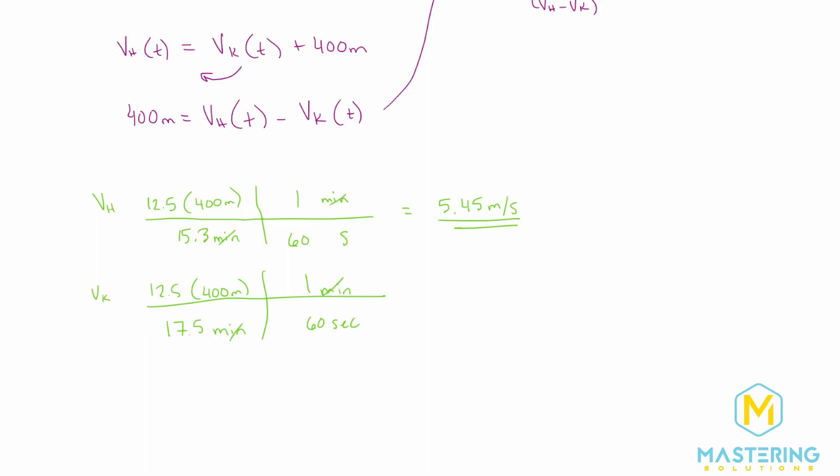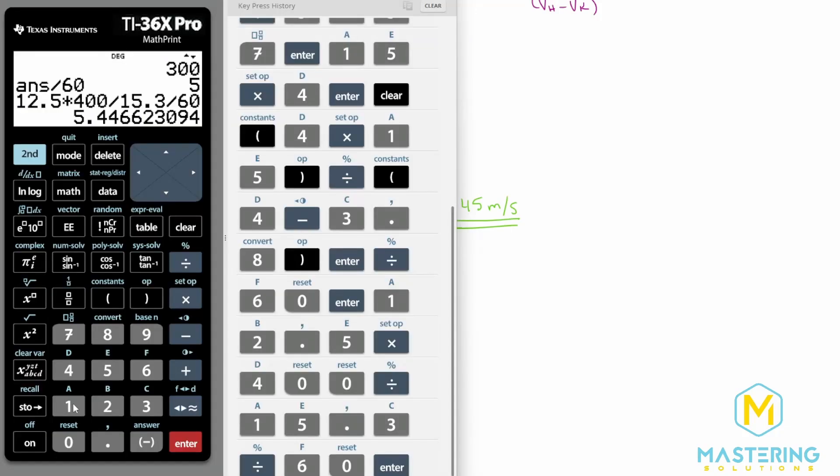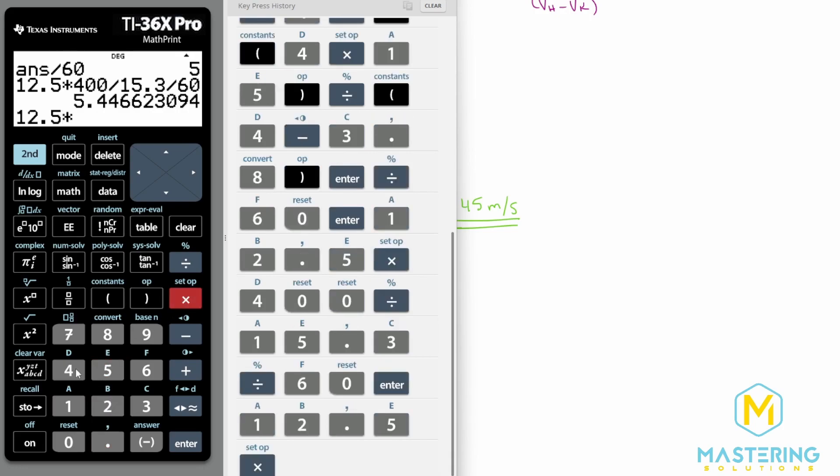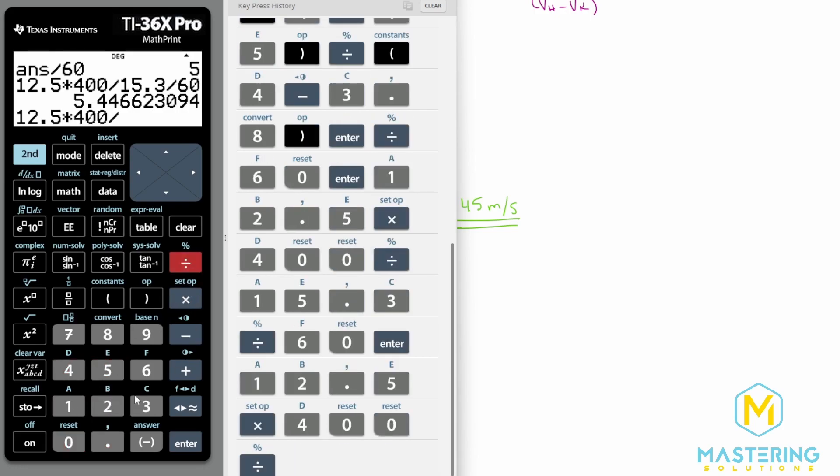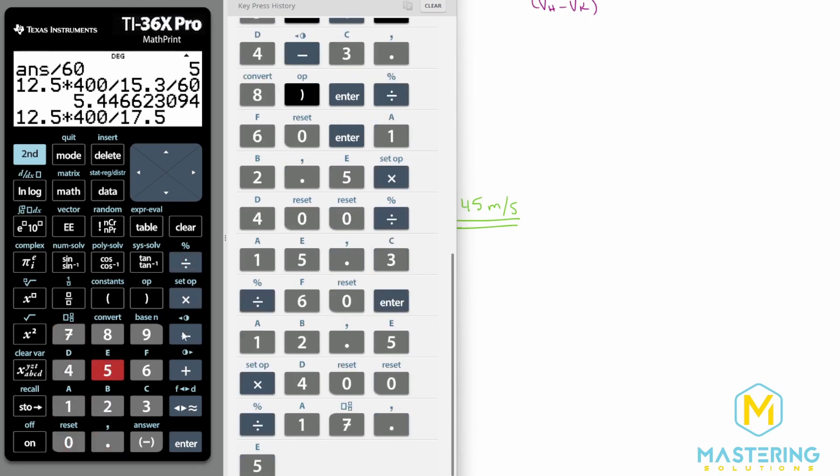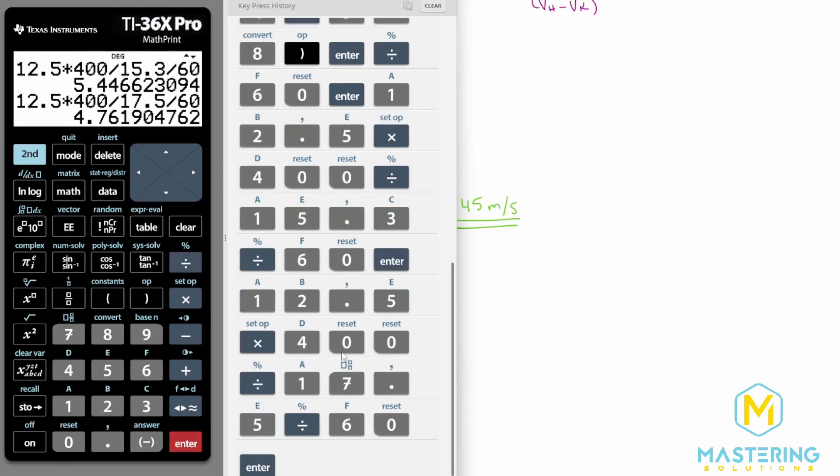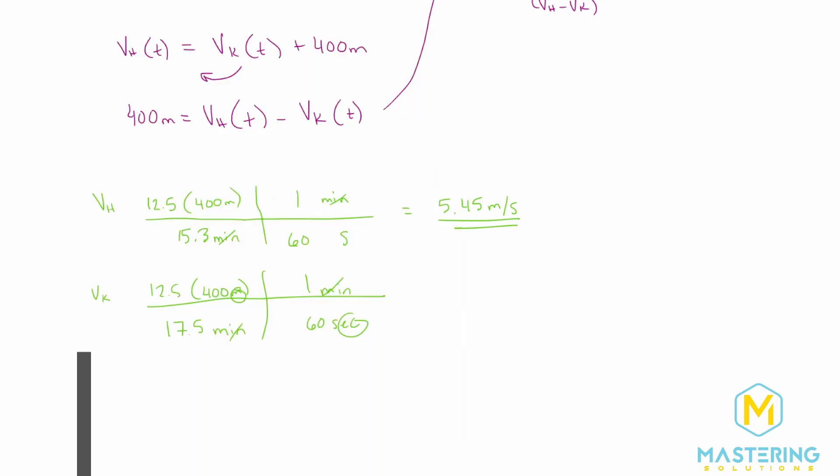So now we'll be in meters per second. And we have 12 and a half times 400 divided by 17 and a half minutes divided by 60 to put us into meters per second. And her speed was 4.8. Or let's leave it at 4.76, just so we're not going to get any rounding errors. So 4.76 meters per second.